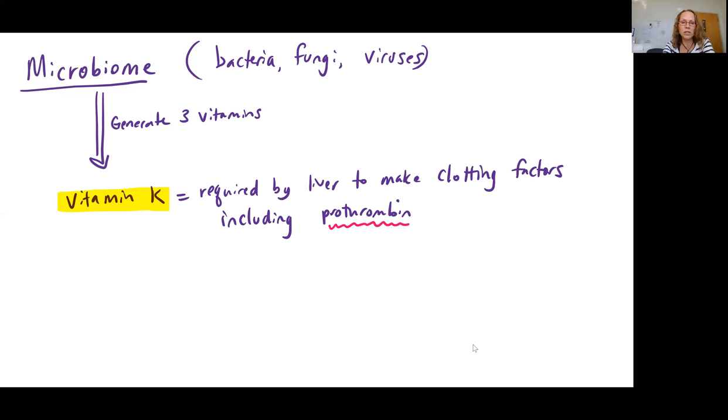The first we can mention is vitamin K. Vitamin K is required by the liver to make clotting factors, including prothrombin, which is one we talked about specifically when we were looking at the intrinsic and the extrinsic and then the common pathway.